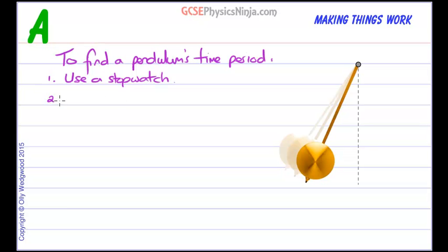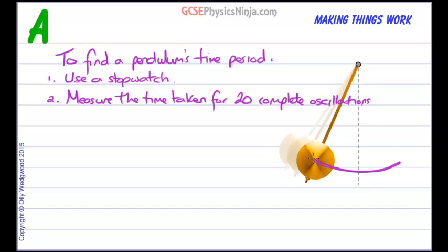Stage two: Measure the time taken for 20 complete oscillations. So there and back is one and two and three and so on.